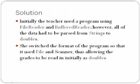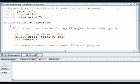Solution Initially, the teacher used a program using a file reader and buffered reader. However, all of the data had to be parsed from strings to doubles. She switched the format of the program so that it used file and scanner, thus allowing the grades to be read in as doubles. To create this program grade average.java, I have already typed in the import statements for java.io.asterx, java.util.asterx, and javax.swing.asterx, respectively to access the file methods, the scanner methods, and joption pane.